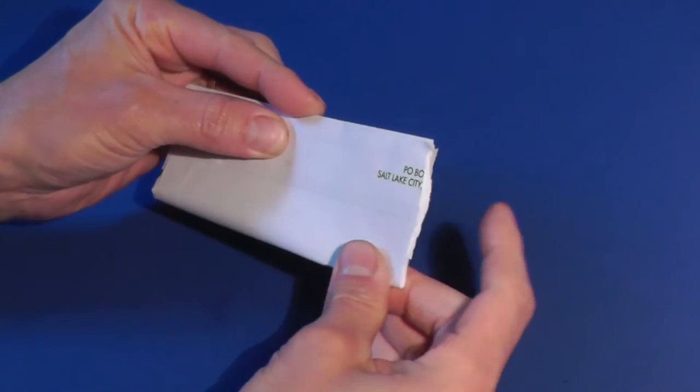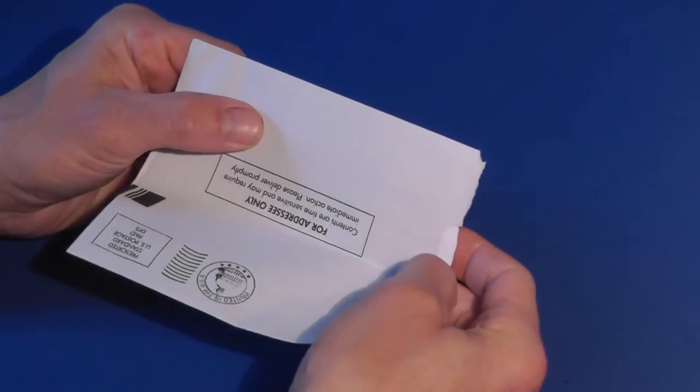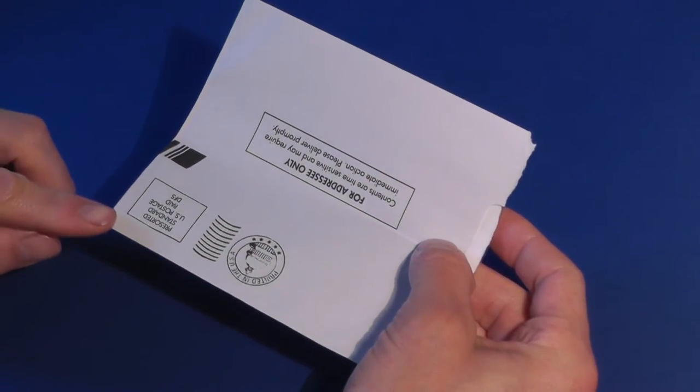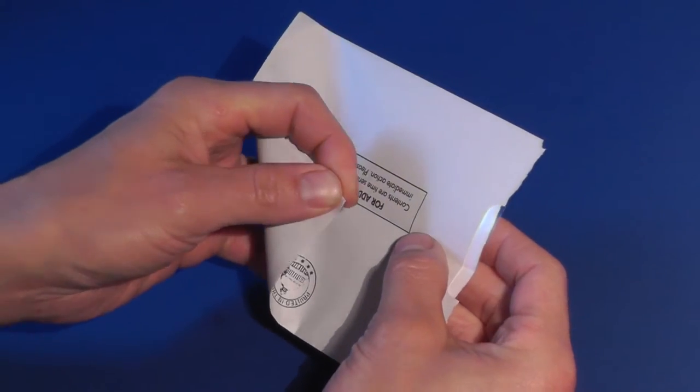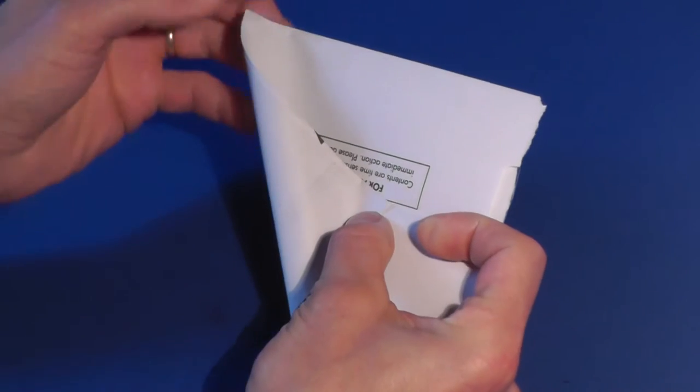Fold the envelope in half and make a crease near the open end of the envelope. Fold the bottom corner so that the corner lines up on the crease and the folded edge extends to the top corner of the envelope.